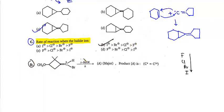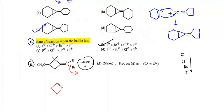Now come to question D. Tert-butoxide is a base and its tendency is to cause elimination. First Br will leave — when Br leaves, a positive charge will be created here. See carefully: the positive charge will be created, and then something will form. Let's trace the mechanism.